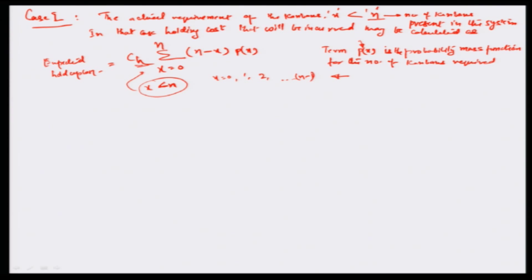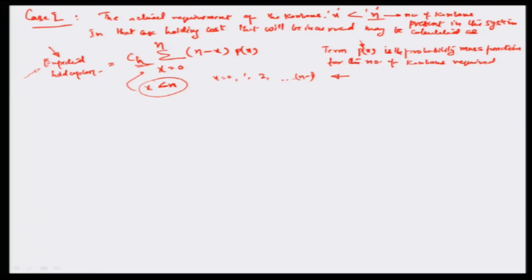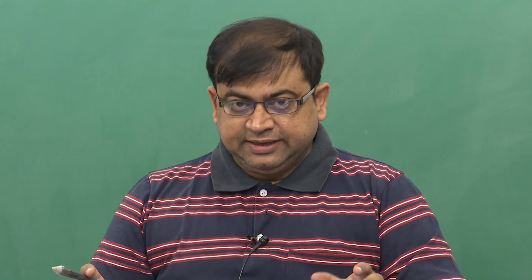The probability mass function is a very common term used in distributions, and the expected cost is always provided through the parameter being considered. In this case, x is the number of Kanbans — the variable parameter — times the probability mass function for x number of Kanbans in the system. That is how the expected cost or expected mean is always defined in probability distributions. I am not going to prove how this summation of products gives the expected cost, as it is a very common statistical equation. However, I will use this to estimate associated costs so we can optimize them to work on a Kanban level that incurs minimum cost.